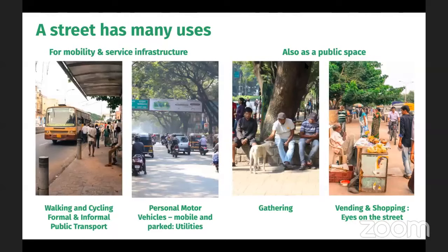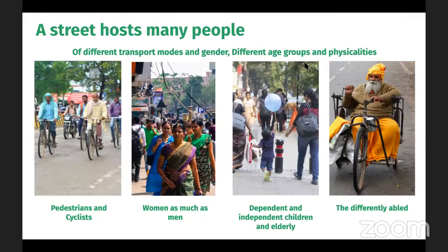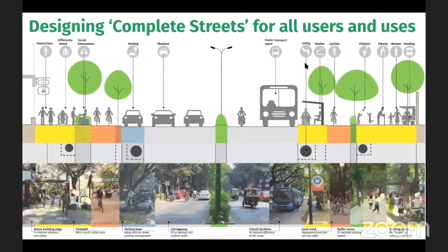A street has many uses. While it is an area used for walking, cycling, informal and formal public transportation, as well as personal motor vehicles, it's also a space under which various utilities are housed. It provides space for parked vehicles but also acts as a wonderful public space for people to gather, with space for vending, parking, and shopping. It hosts a variety of people ranging from pedestrians to cyclists, women as much as men, children and elderly who are both dependent and independent, as well as the differently abled. Hence it's very important for us to design streets for all users.